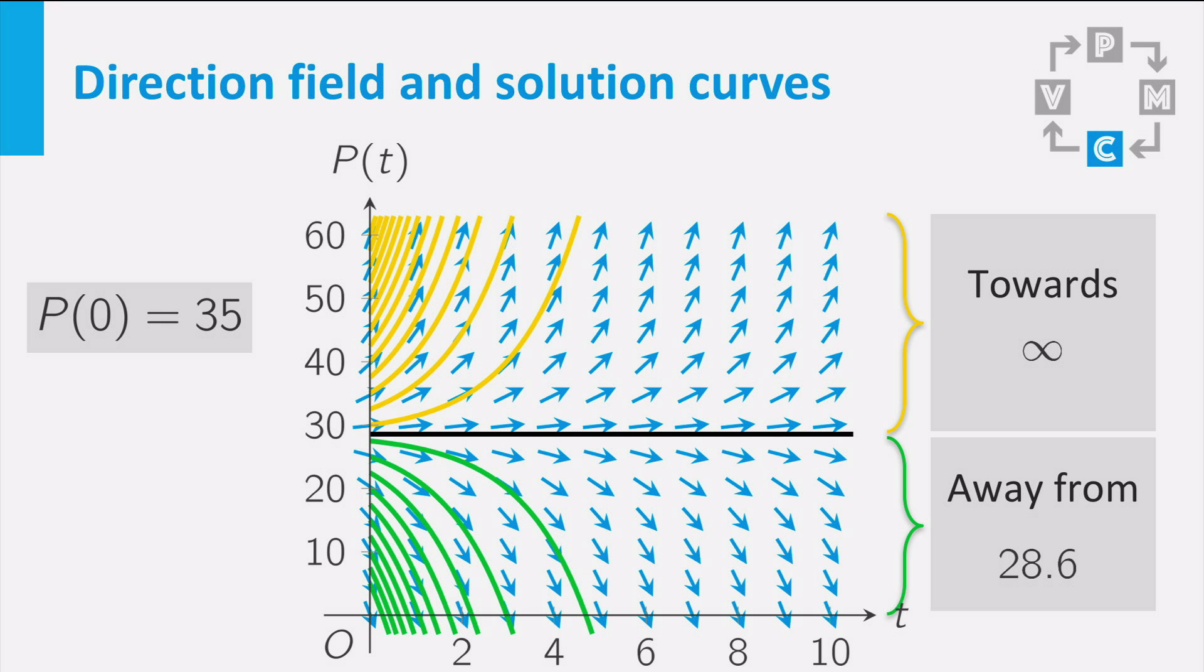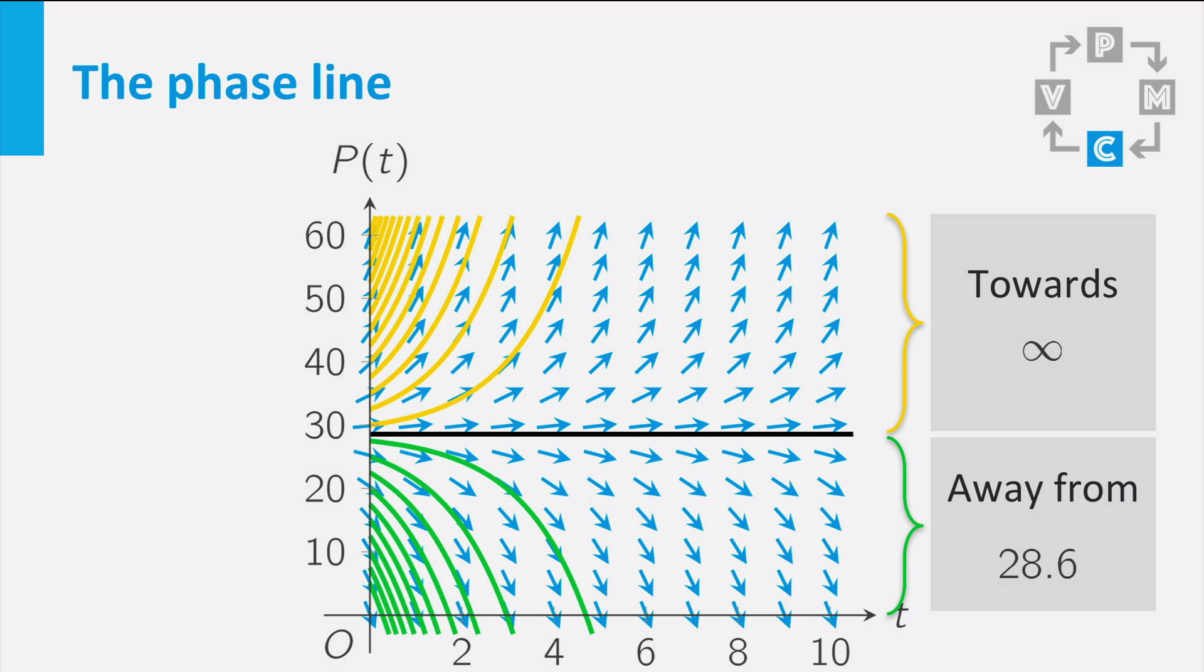This is a lot to say, so maybe we can summarize this in a new type of graph. Because you know only the initial value determines how the solution curve behaves, you could make a graph which only contains values of the dependent variable p. Our previous conclusion shows that the important value is 28.6, so let us draw a vertical line containing this value, indicated by the point.